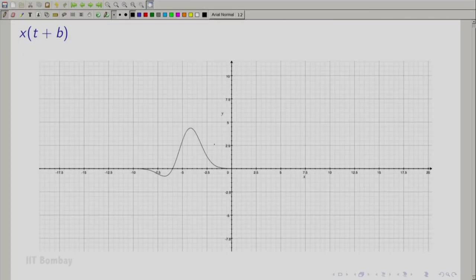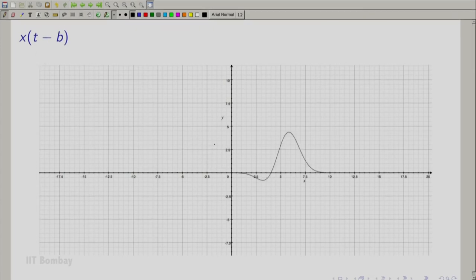So, that is how you explain a linear shift in the independent variable. This is similarly a graph of x(t - b). Here, as expected, the entire graph shifted to the right instead of to the left.